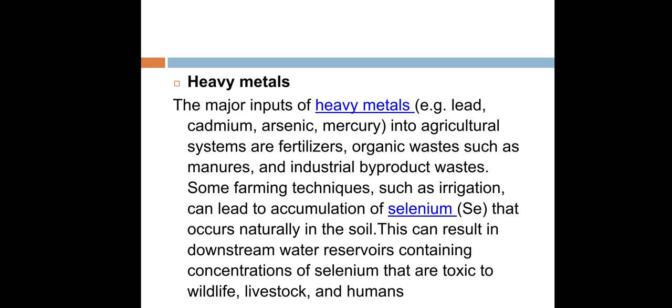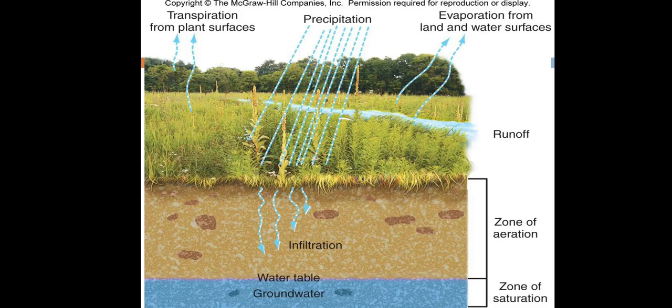Another pollutant is heavy metals. Major inputs include lead, cadmium, arsenic, and mercury introduced into the agriculture system through fertilizers, organic waste such as manure, and industrial byproduct wastes. The water cycle diagram shows transpiration from plant surfaces, precipitation, and evaporation from land and water sources like rivers, with some water infiltrating to the groundwater table and recharging it.